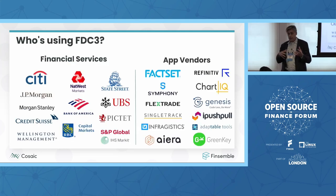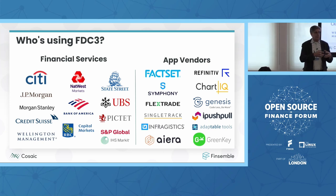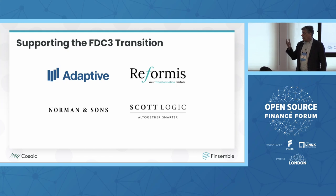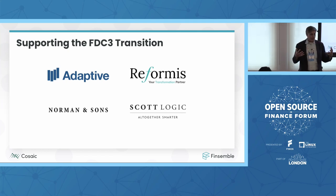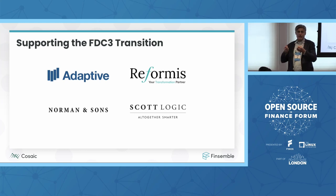I've broken down who's using FDC3 into four categories: desktop agents, financial service companies who have actively invested, app teams — the firms building best-of-breed apps to plug into your smart desktop, and this is where FDC3 really allows that plug-and-play experience. Supporting this transition are the agents of change: Adaptive, Reformist, Normans & Sons, and ScottLogic have all been active participants. We work closely with all of these firms to help clients implement their desktops and leverage FDC3.